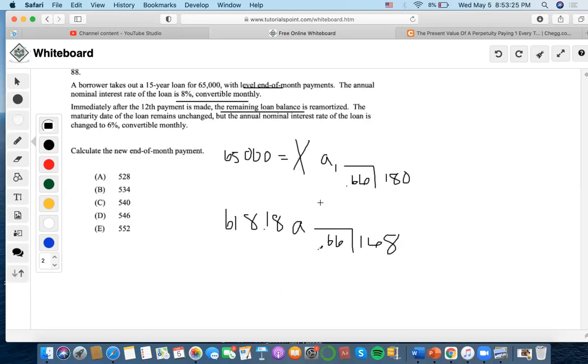Present value. Okay, this is going to be 62,646.09. Right, now we are saying so this is the amount of loan left on time 12. Now we're saying that the maturity loan remains unchanged but the annual nominal interest rate of the loan is changed to 6% convertible monthly. Right, so we're gonna make this is the new payment that we're gonna try to find.